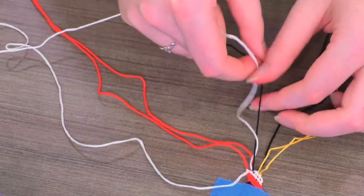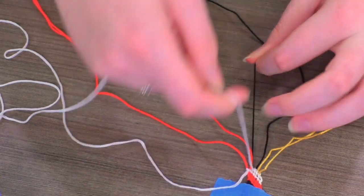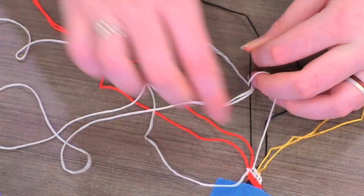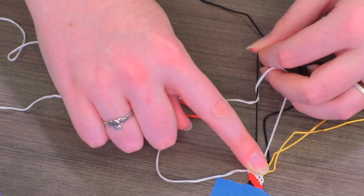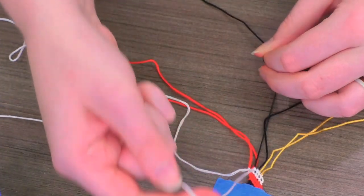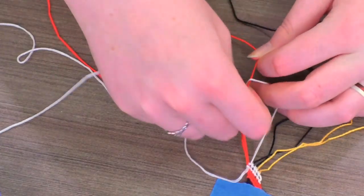You want to watch out. As you go, your bracelet will kind of want to curl in on itself, just the way the strings are. So when you have it taped down, you might want to keep moving the tape closer and closer so that it doesn't curl because that will make it harder to do the knots.